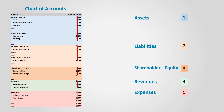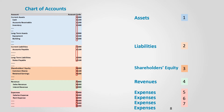Some companies would classify expenses into categories and start those categories with other numbers. For example, a company could start an operating expense account with the number five, and accounts falling under other expenses start with the number six. Companies can also add more categories in expenses, using the numbers seven, eight, or nine.